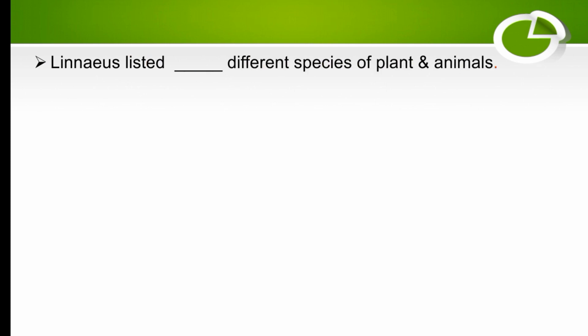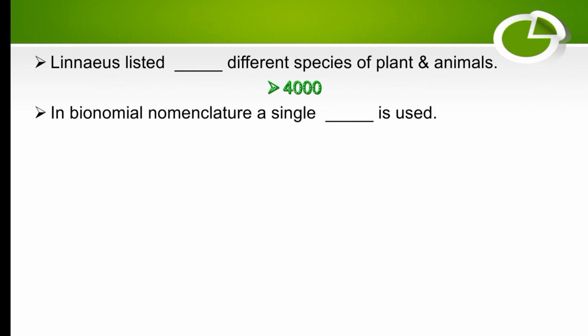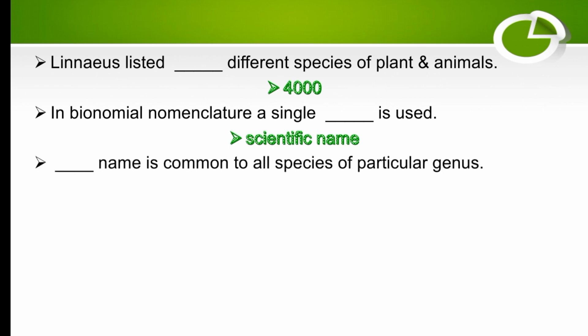Linnaeus listed four thousand different species of plants and animals. In binomial nomenclature, a single scientific name is used which is acceptable in all words worldwide. The generic name is common to all species of a particular genus.